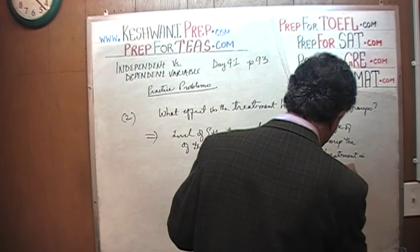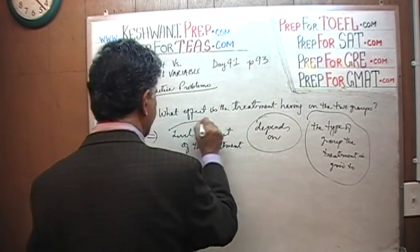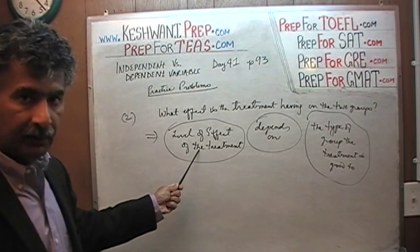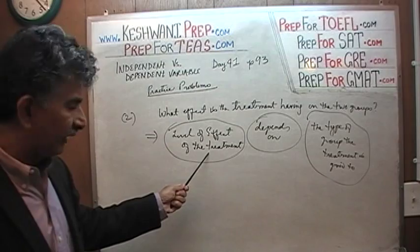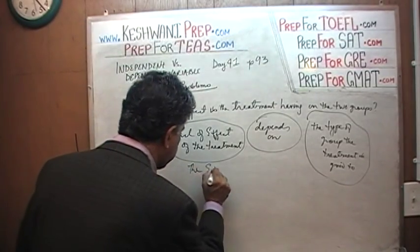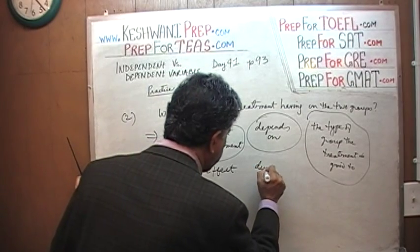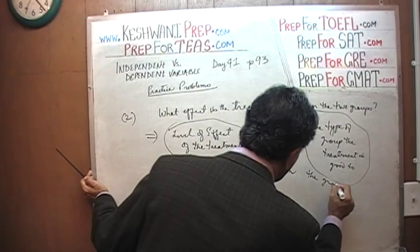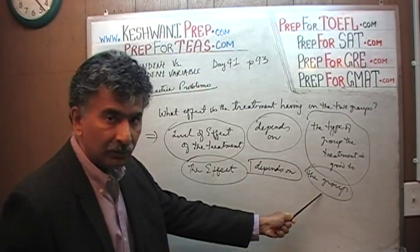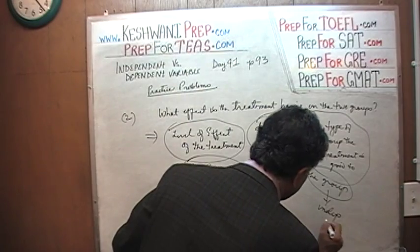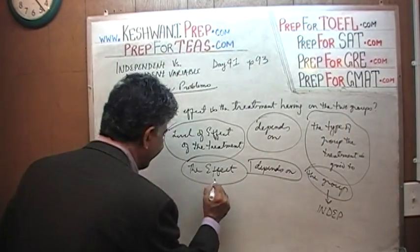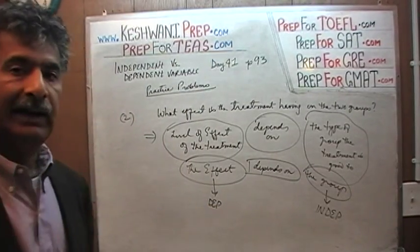The treatment has been given to these groups. What this question is trying to say is that the level of effect — in the mind of the person asking the question — the effect depends on the group. If the effect depends on the group, then the group is the independent variable, and the effect is the dependent variable because the effect depends on something.